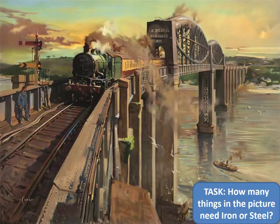Now let's have a look at this artist's impression, taken from an old Great Western Railway advert. Such railway posters were designed to attract people to their destinations and showed off some of their most impressive engineering achievements. This poster dates from the 1930s but shows many of the developments of the previous century. Your task is to pause the video and note down how many pictures or things within this picture need iron or steel as part of their construction.